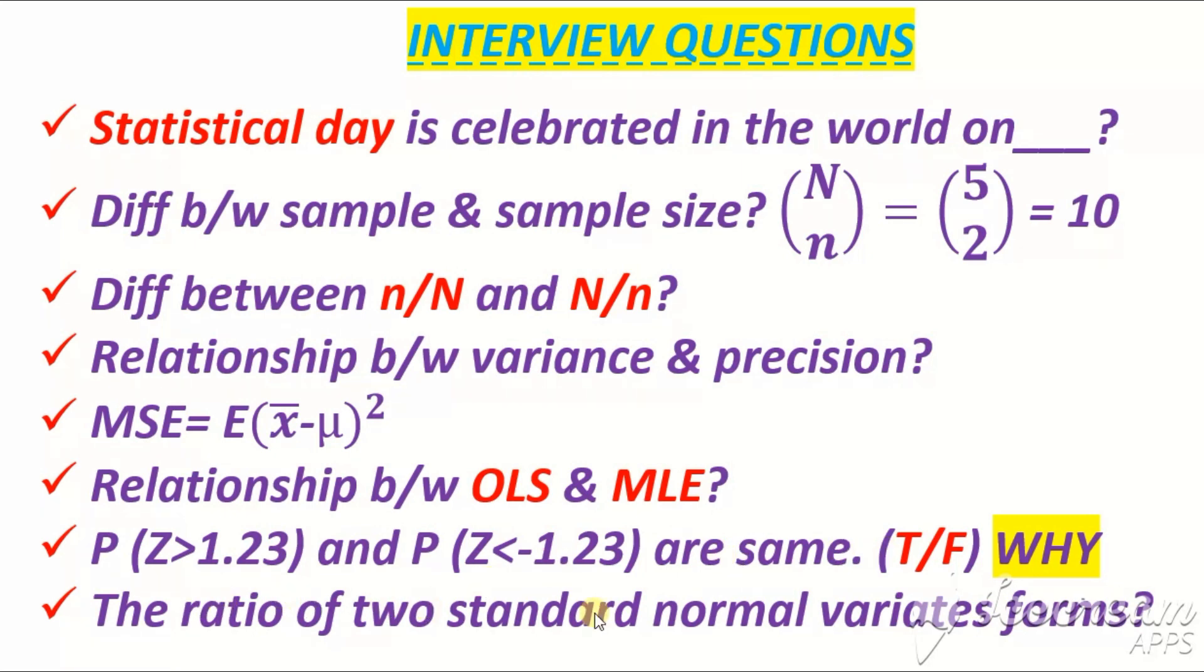The ratio of two standard normal variates forms which distribution? That is a very important question. When you take the ratio of two standard normal variates, remember it forms a Cauchy distribution. The ratio of two standard normal variates forms Cauchy distribution.